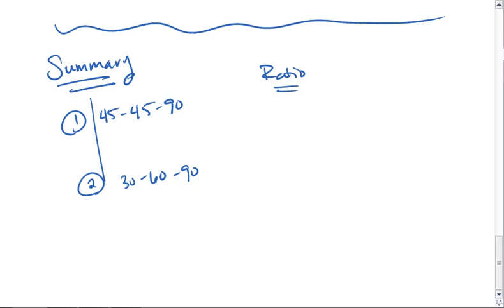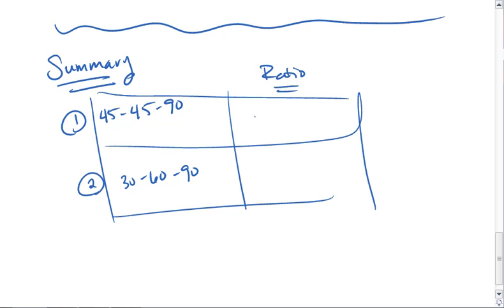If we have a 45-45-90 triangle, the ratio is 1 to 1 to the square root of 2.